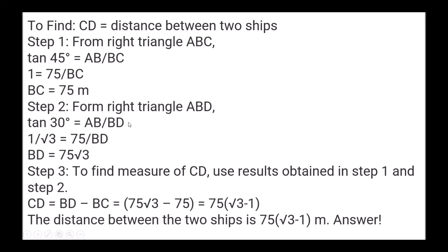From right triangle ABD: tan 30° = AB/BD, so 1/√3 = 75/BD, giving BD = 75√3. The distance CD = BD − BC = 75√3 − 75 = 75(√3 − 1) meters. This is the distance between the two ships.